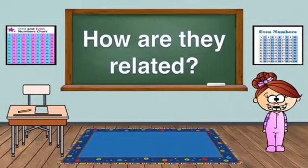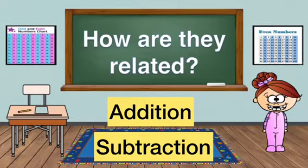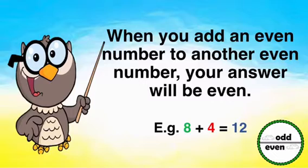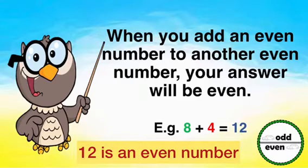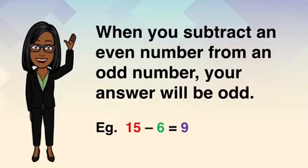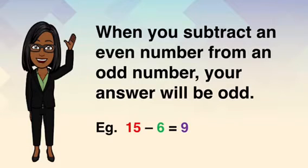How are odd and even numbers related? Addition and subtraction sentences can show the relationship between odd and even numbers. When you add an even number to another even number, your answer will be even. 8 plus 4 equals 12, and 12 is an even number. When you subtract an even number from an odd number, your answer will be odd. 15 minus 6 equals 9. 6 is an even number, and when subtracted from 15, which is an odd number, the difference, which is 9, is odd.